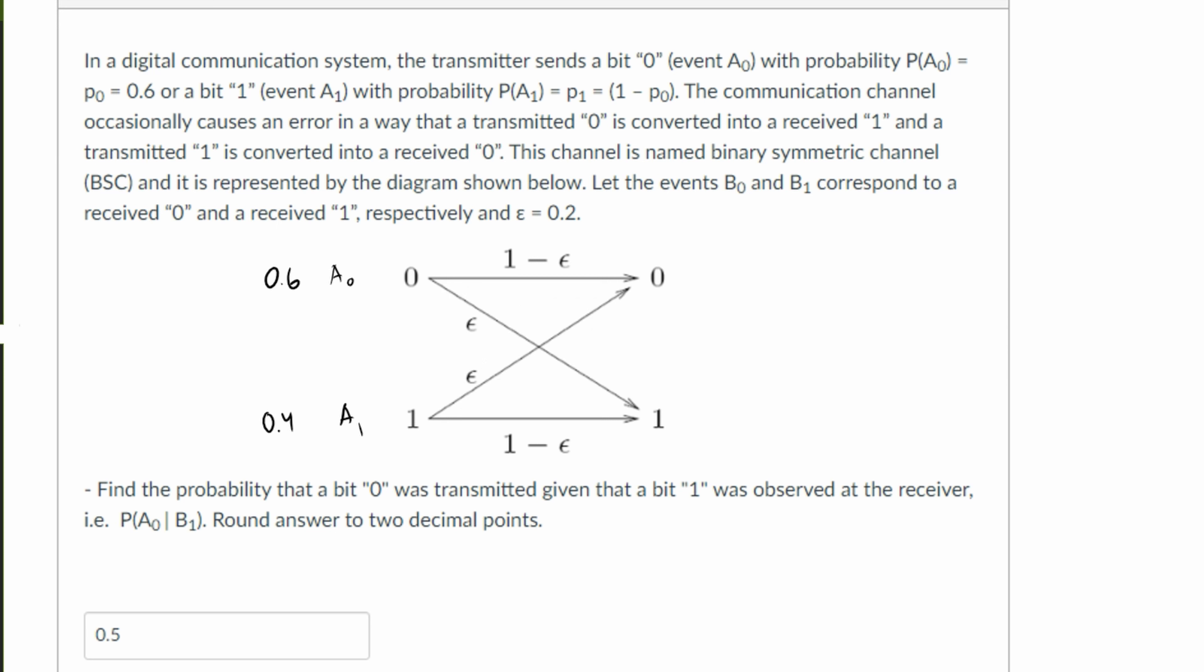So we get some errors. We have events B0 and B1, and we have this ε (epsilon), I forget what it's called, but it's equal to 0.2.